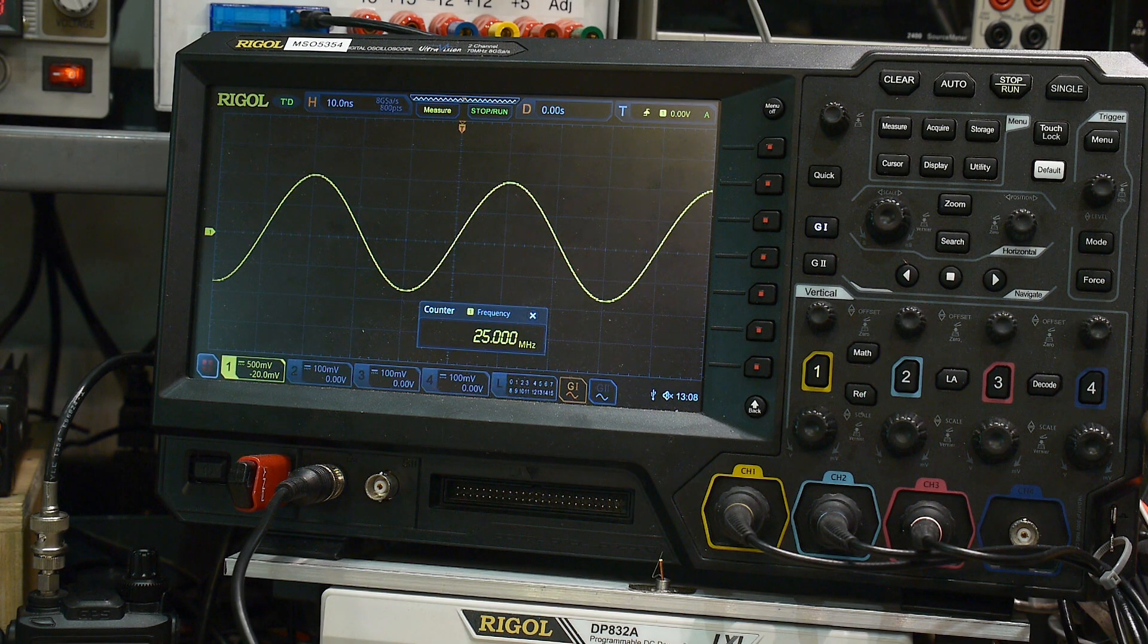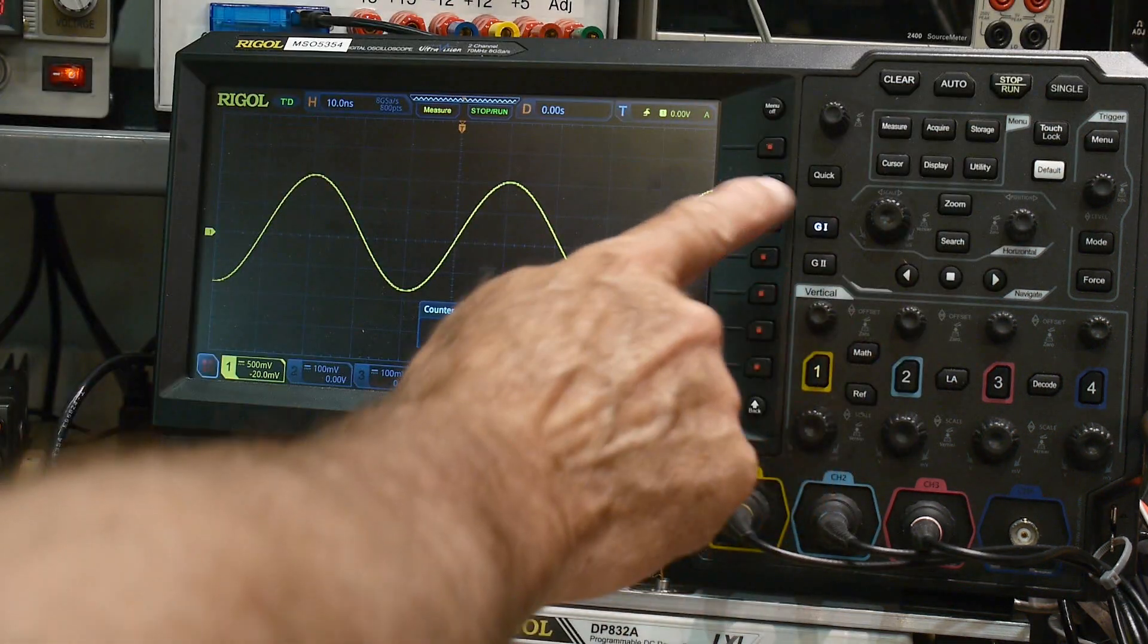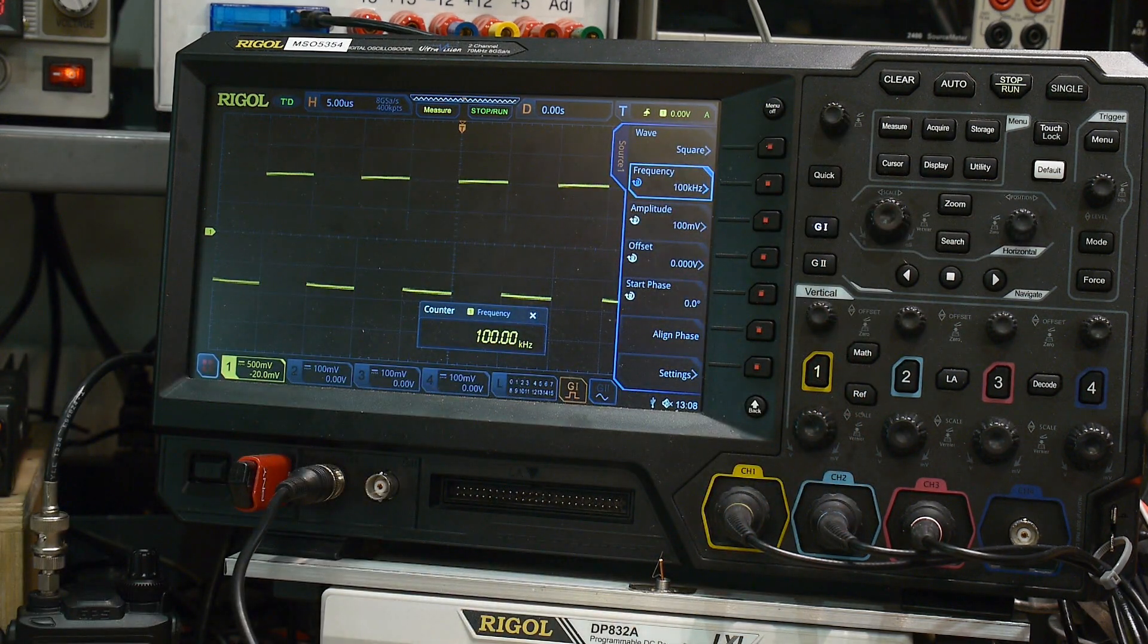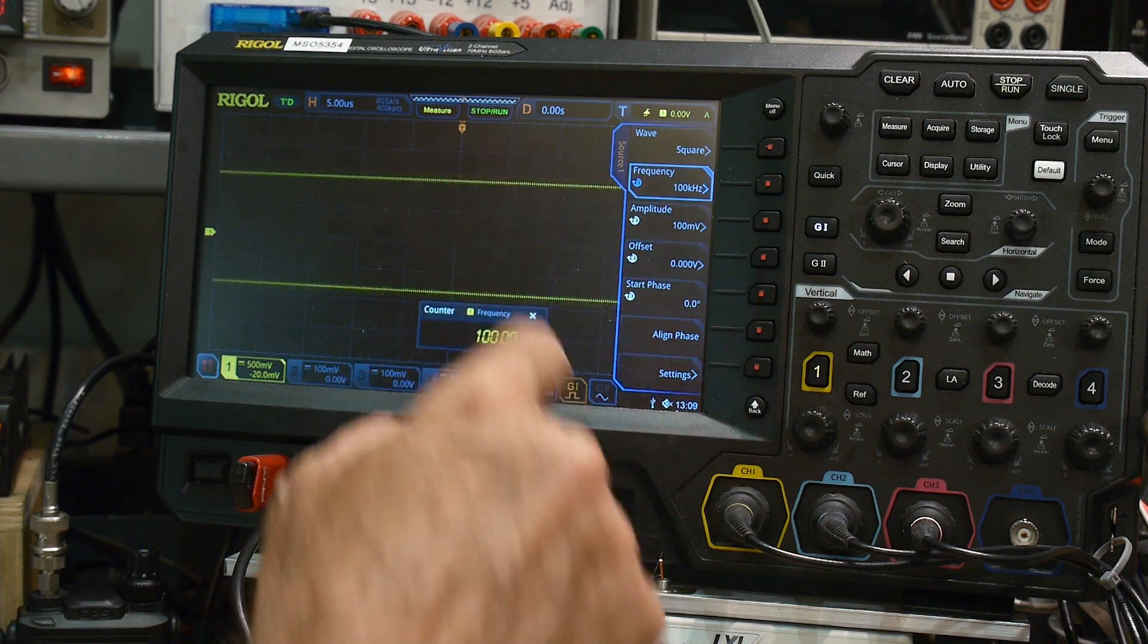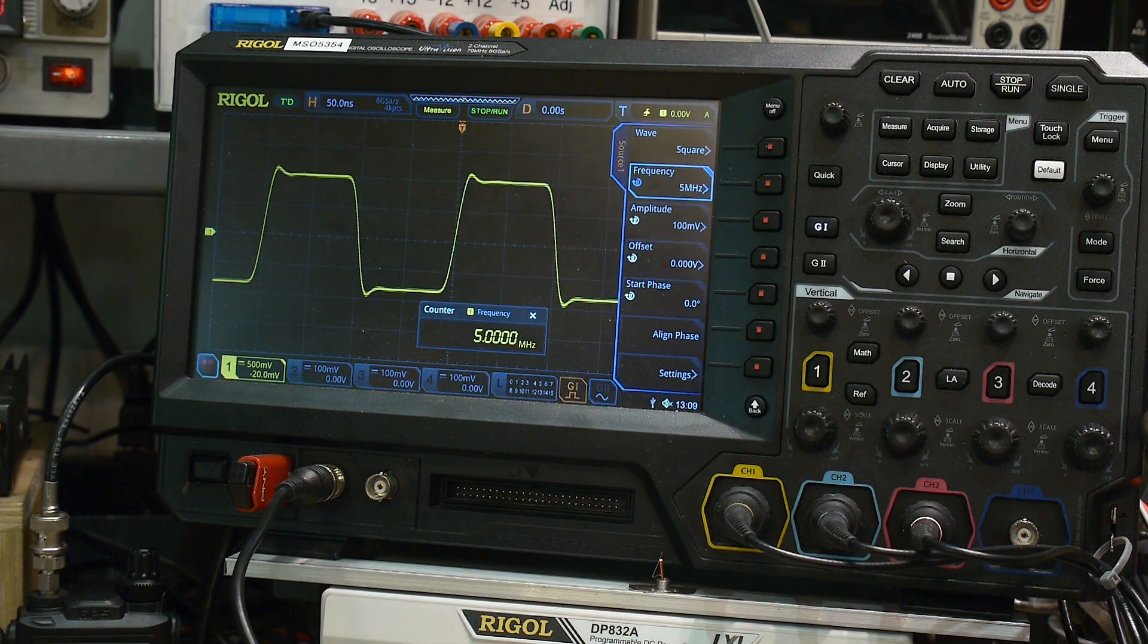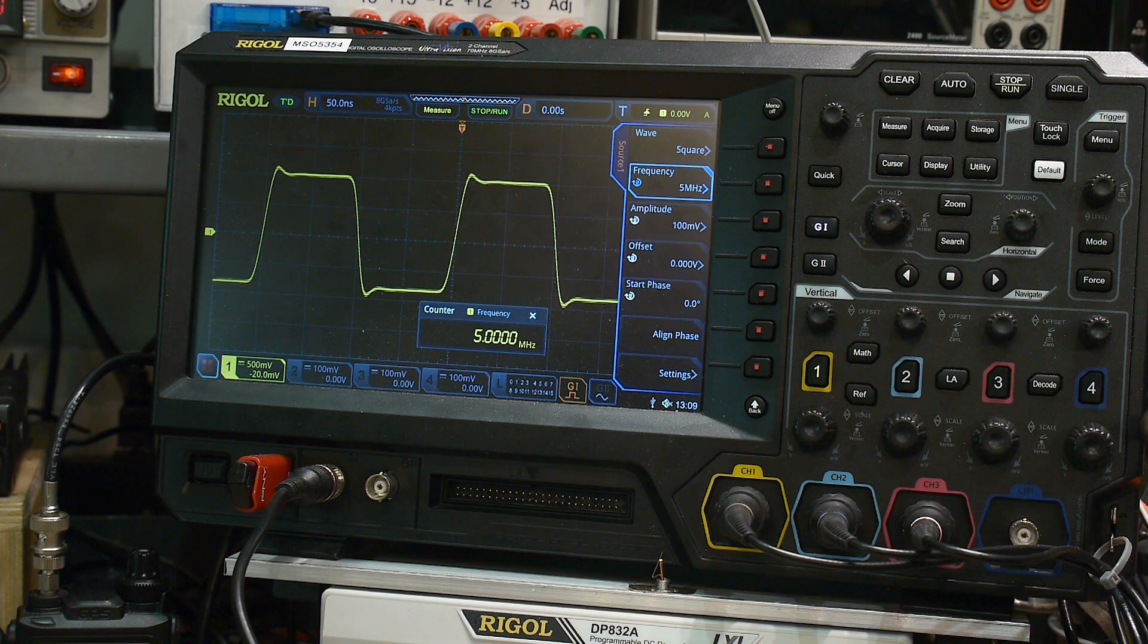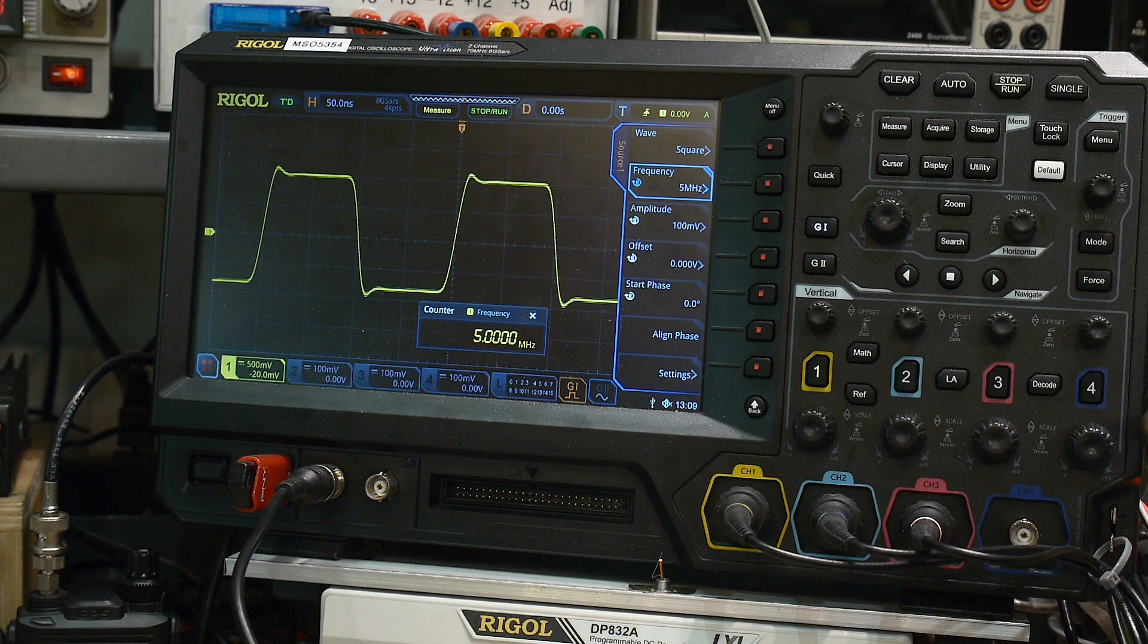He does pretty good at edges too. Let's change to 100 kilohertz—actually, let's go to five megahertz. There we go, a five megahertz square wave. It's doing really good, just a tiny bit of overshoot, but it looks pretty nice to me. This is a nice part. We're inputting plus or minus 0.1 volts and getting out plus or minus one volt.